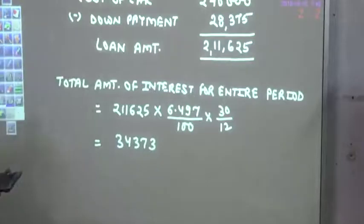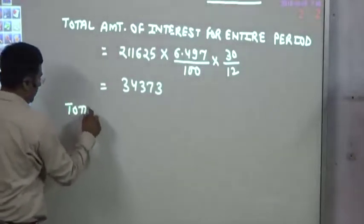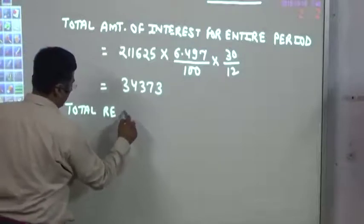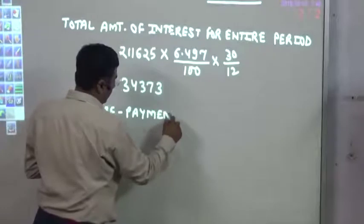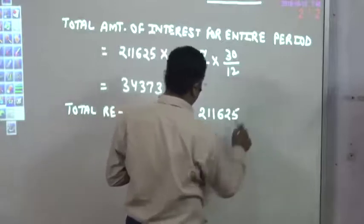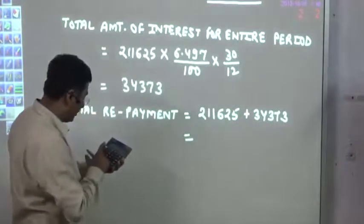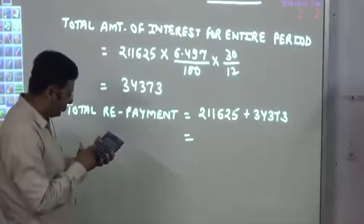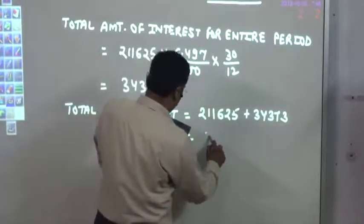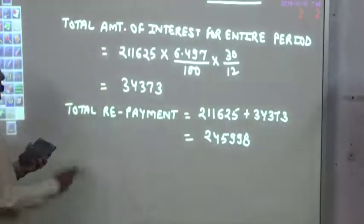That is our amount of interest. Now the total repayment will be: 2,11,625 (principal) plus 34,373 (interest). So 2,11,625 plus 34,373 equals a total of 2,45,998. This is the total amount you have to repay along with the interest.